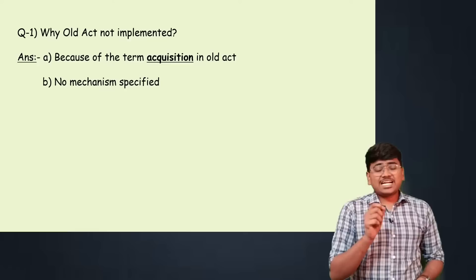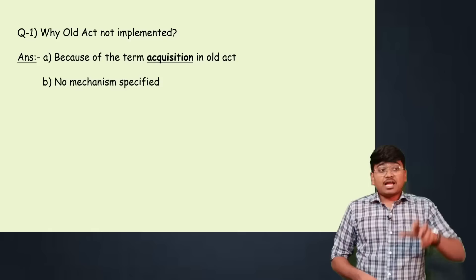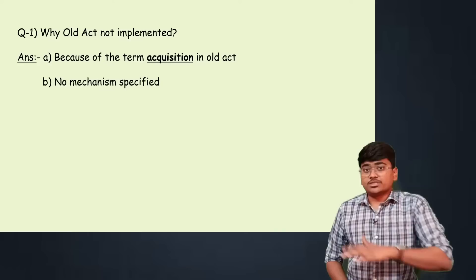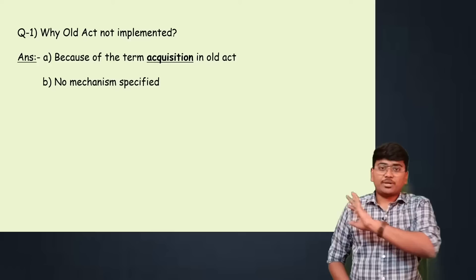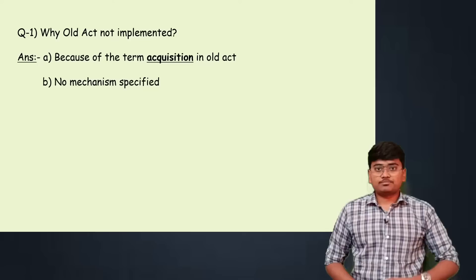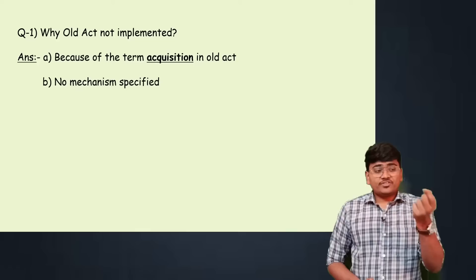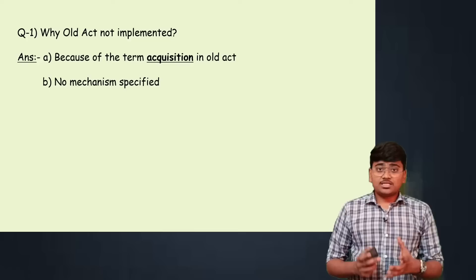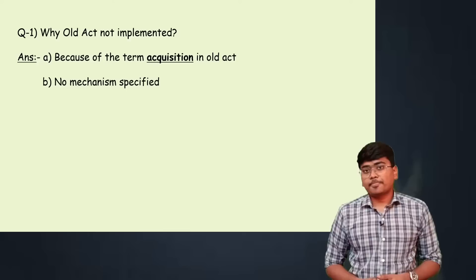The second reason was that no rules were framed. An act is implemented by rules framed by the respective government departments. The act gives power to departments using words like 'as may be prescribed in the rules.' However, in the old act no such power was given to make rules. Therefore, no rules were made, and there was no mechanism specified for confiscation of property or other relevant procedural aspects. These are the reasons why the old act could not be implemented.